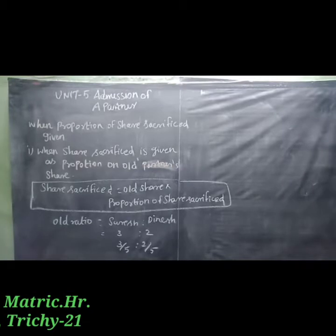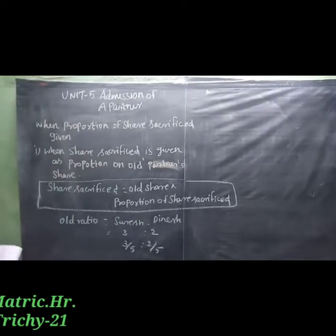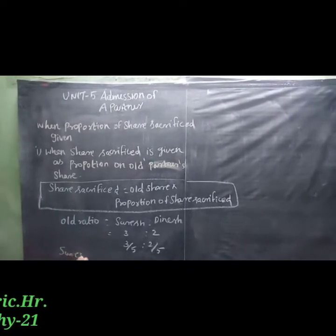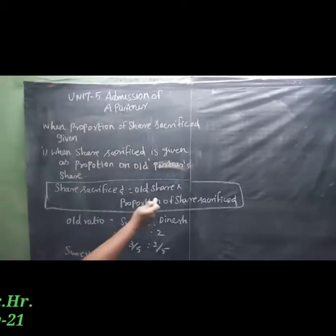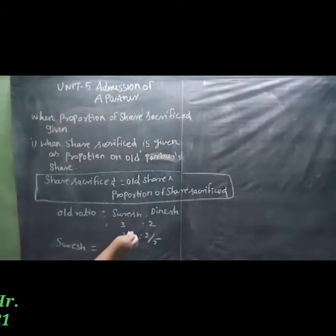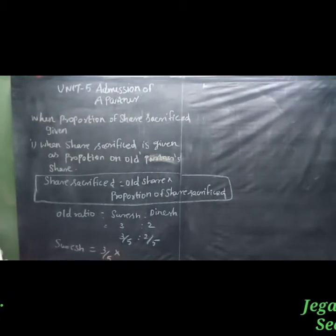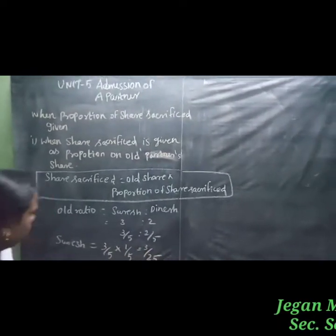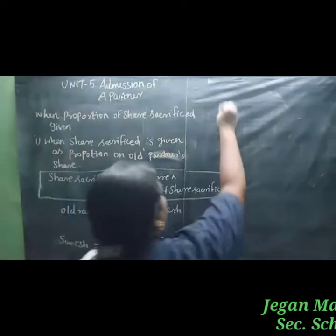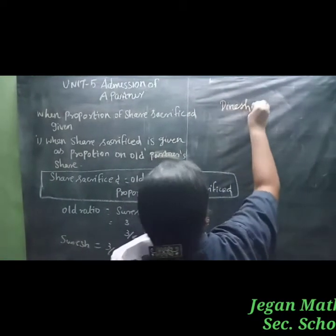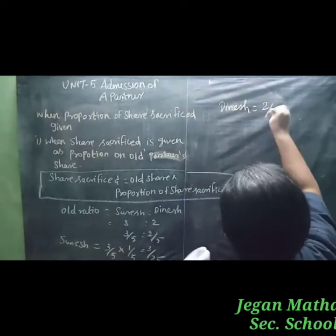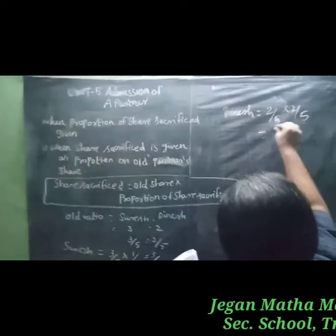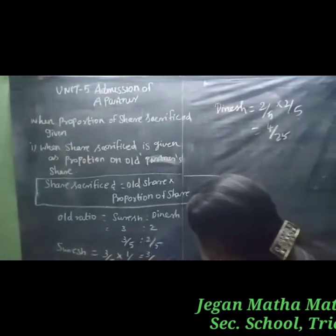Next, we find the share sacrifice. For Suresh: old share 3/5 multiplied by proportion of share sacrifice 1/5 equals 3/25. For Dinesh: old share 2/5 multiplied by Dinesh's sacrifice proportion 2/5 equals 4/25.